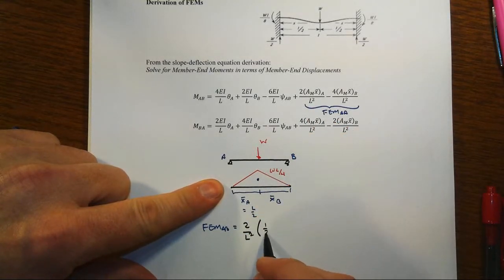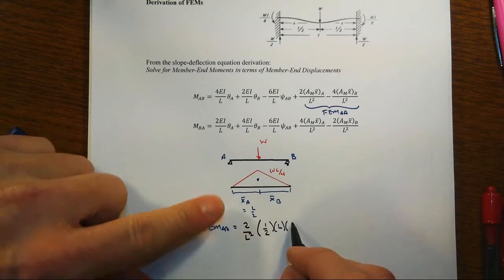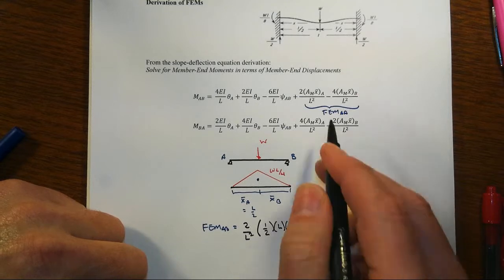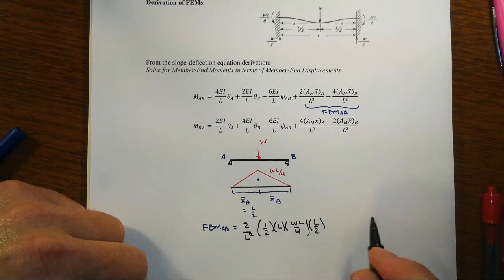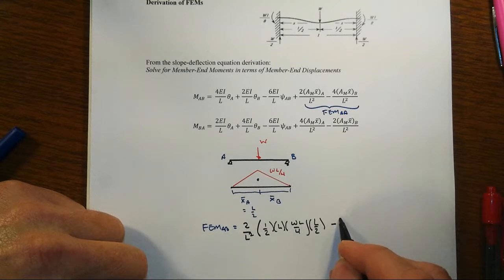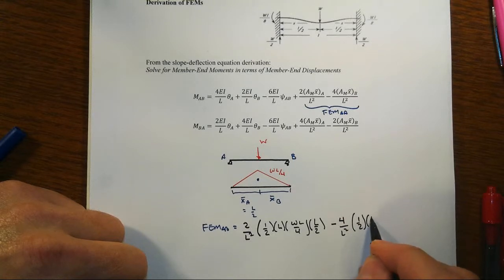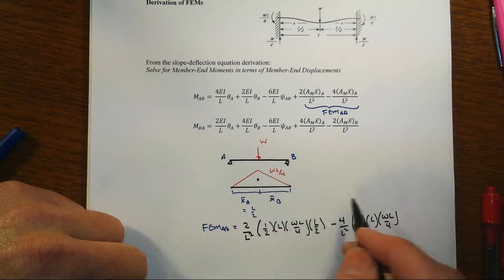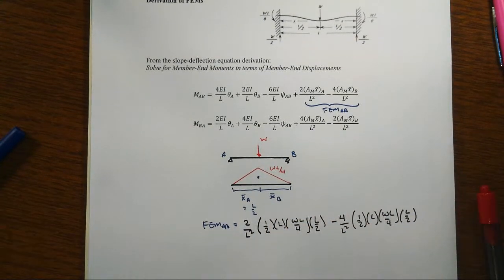That's going to be equal then to 2 over L squared times the area of that moment diagram, which is one-half of the base (which is L) times the height (which is WL over 4) times the moment arm (which is L over 2), minus 4 times over L squared times that area (which is 1/2 times L times WL over 4) times its moment arm X_B (which is L over 2 as well).